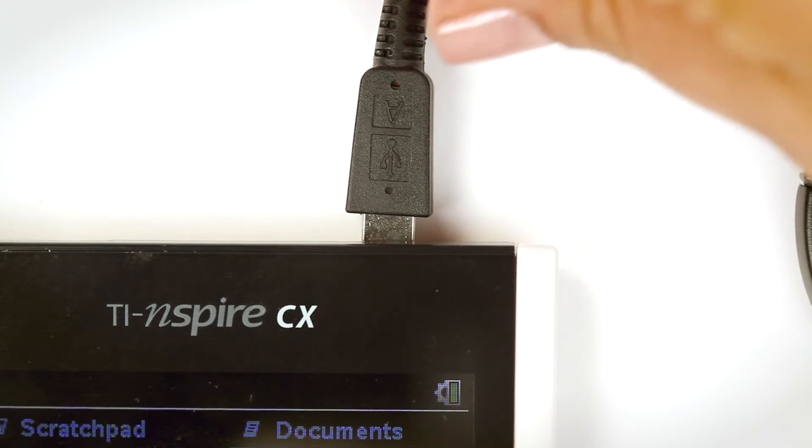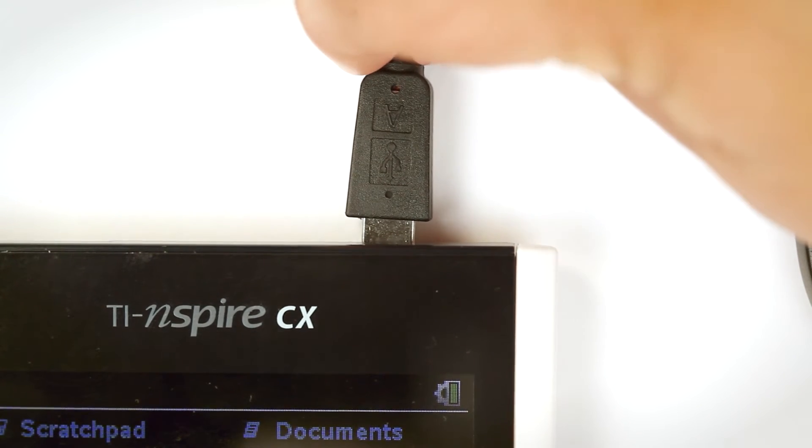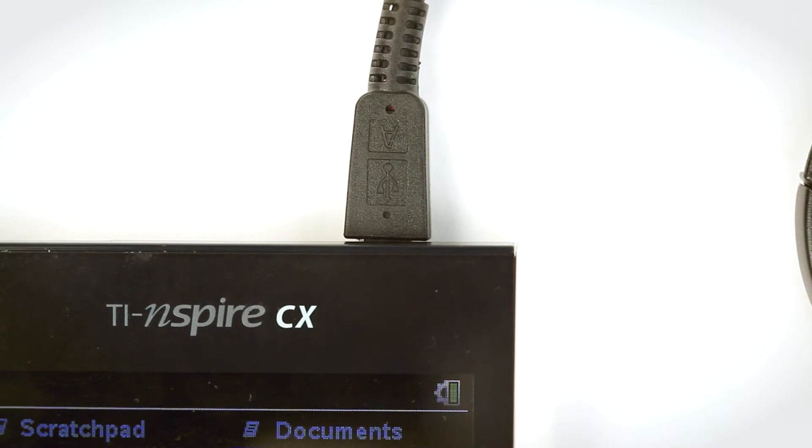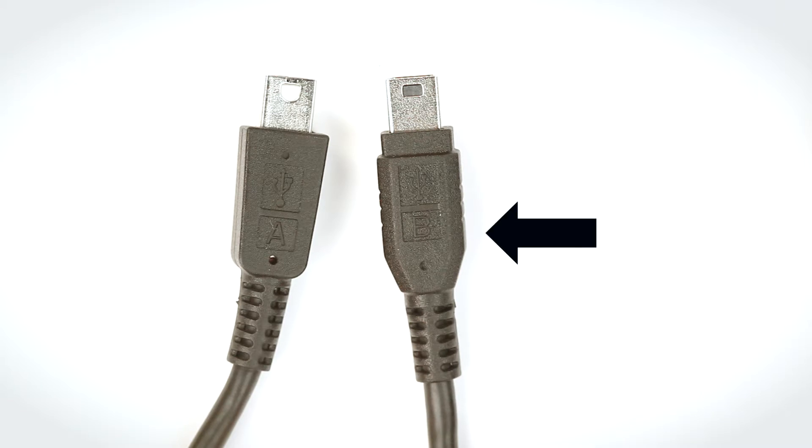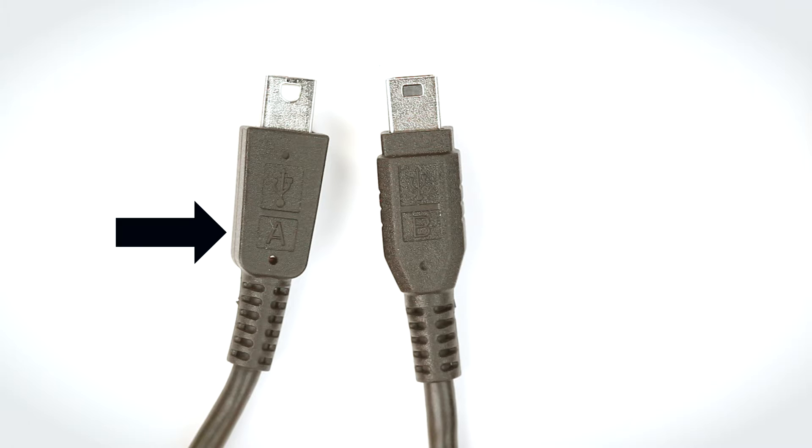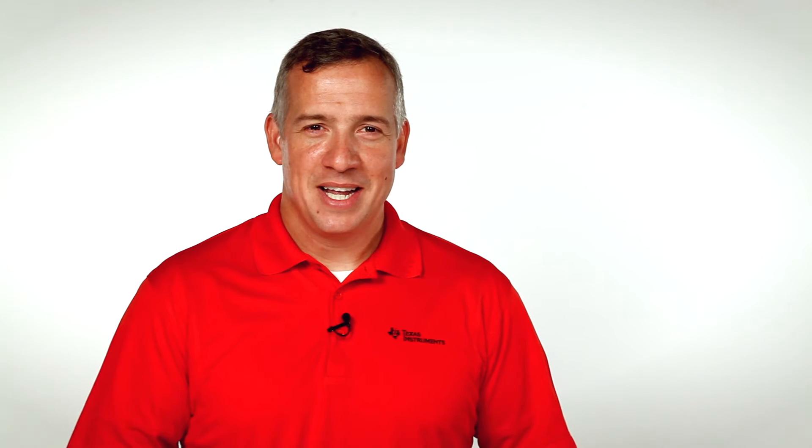Then, connect your TI Inspire CX handheld to the TI Innovator hub with the Mini A, Mini B USB cable. Note that the B end of the cable plugs into the hub, and the A end of the cable plugs into the handheld. An easy way to remember that is the Bs go together. The B connector goes to the hub.